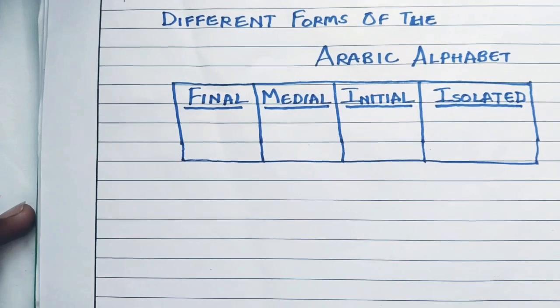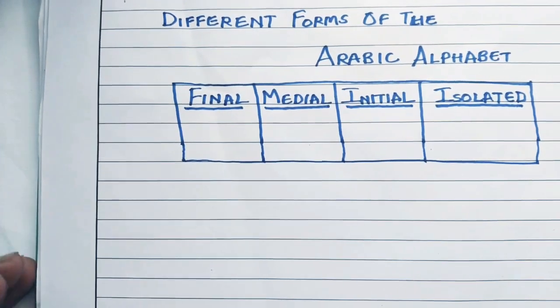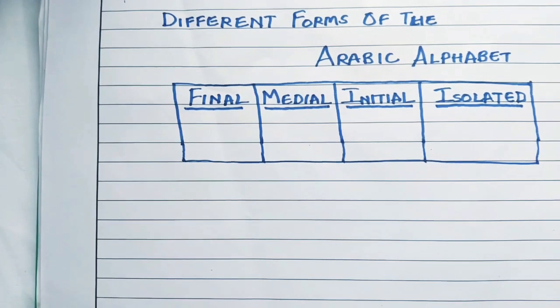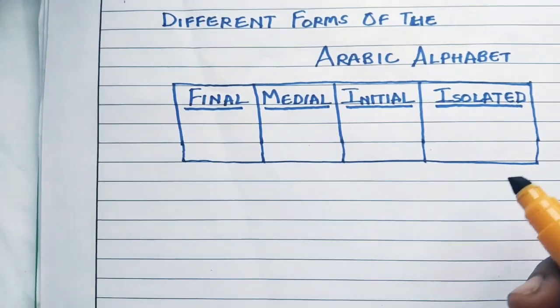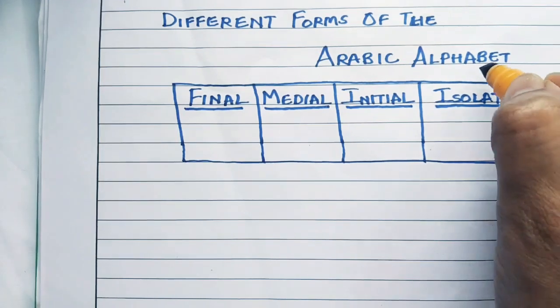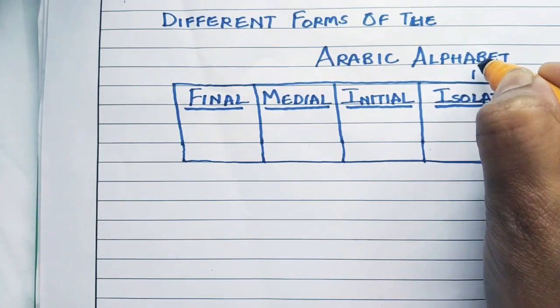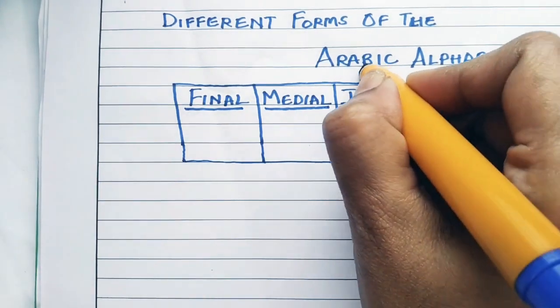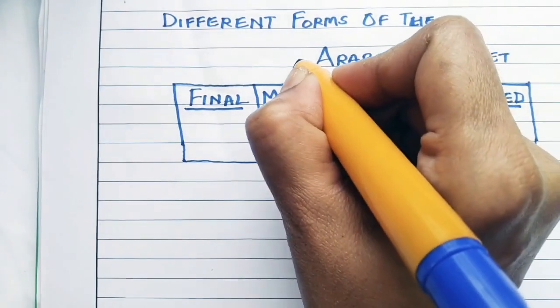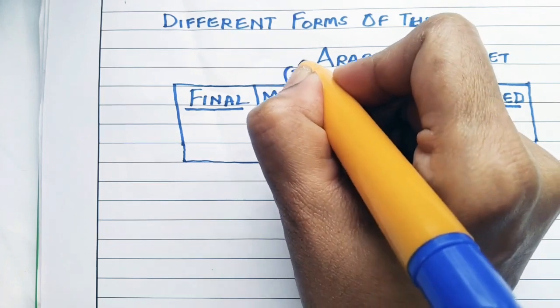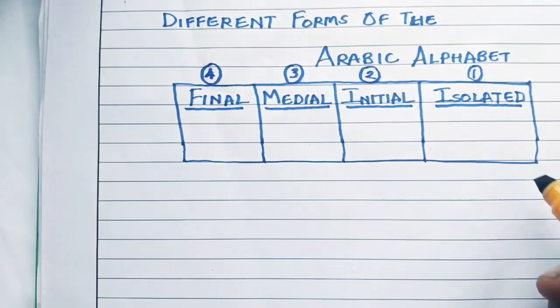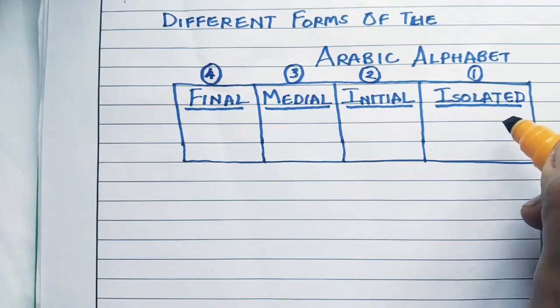In this video today we'll learn the different forms of the Arabic alphabet. So there are four forms: one is isolated form first, second is initial form, third is medial form, and fourth is final form.